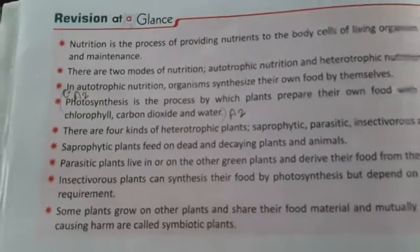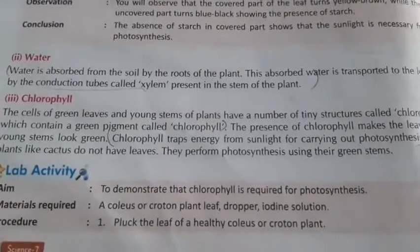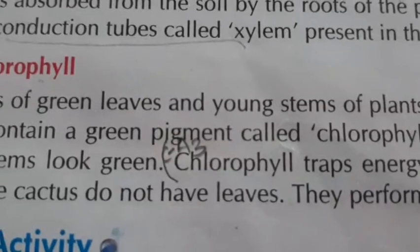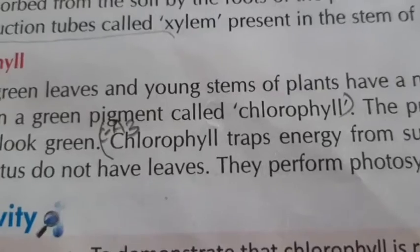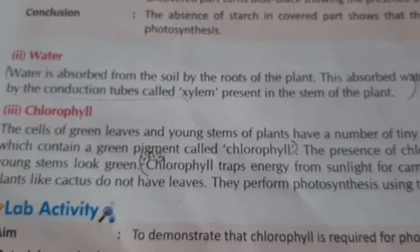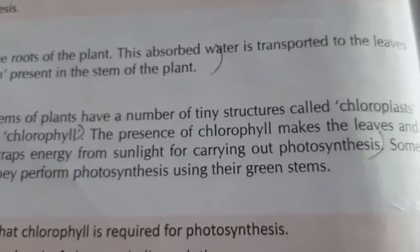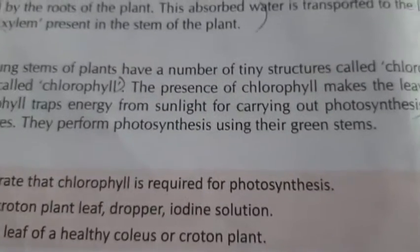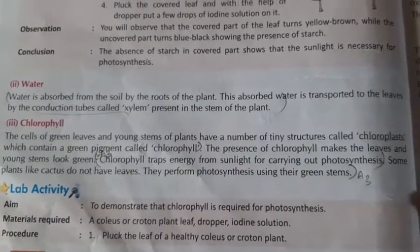Question 3: What is the function of chlorophyll? On page 6, the marked answer is: Chlorophyll traps energy from sunlight for carrying out photosynthesis. Some plants like cactus do not have leaves; they perform photosynthesis using their green stems. Write from 'chlorophyll traps' up to 'photosynthesis' as marked.